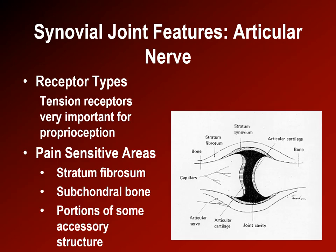The stratum fibrosum of the capsule has tension receptors, which are very important proprioceptors giving us information about joint angle — very important in helping regulate accurate and efficient movement. There are also some pain-sensitive areas in accessory structures including the stratum fibrosum, the subchondral bone, and portions of some accessory structures, but only those close to the bone.